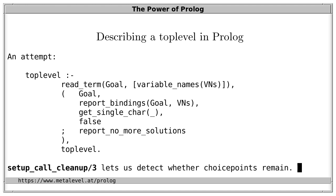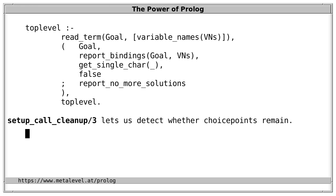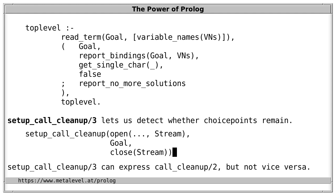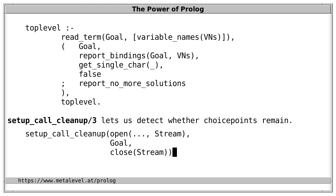We can refine this further. Many Prolog systems provide the predicate setup_call_cleanup, which we can use to detect whether choice points remain. This isn't yet part of the Prolog standard, but many systems already provide it. The most common use is to prevent resource leaks — ensuring that every stream opened is always closed, regardless of whether a goal succeeds, fails, or throws an exception. There is a closely related predicate call_cleanup, which we can express with setup_call_cleanup but not vice versa, because we may need to refer during cleanup to the stream opened in the setup phase.